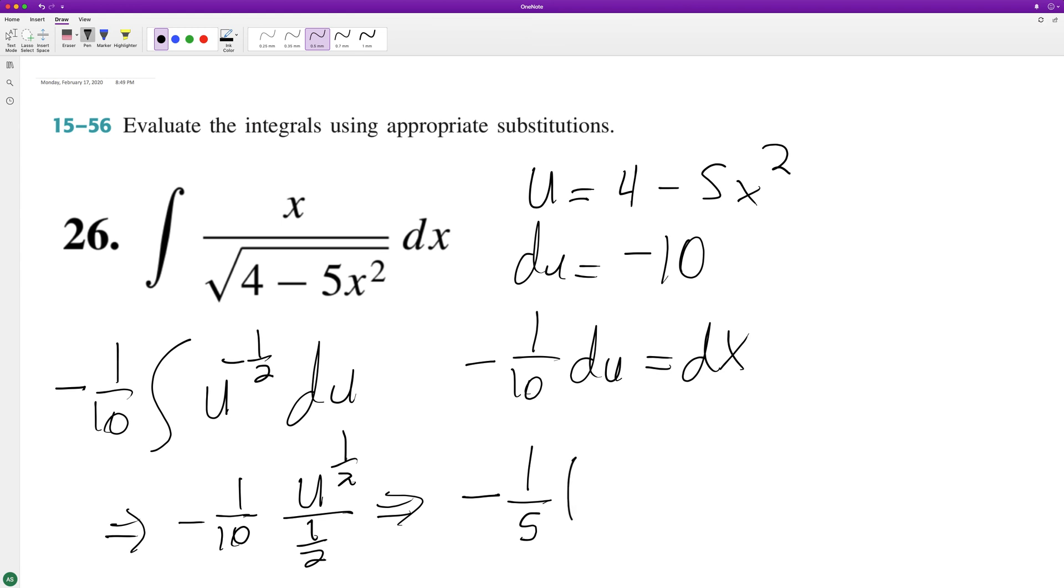U raised to the 1 half, so we'll just substitute back in 4 minus 5x squared. I'll just keep it as 1 half, even though it's the same thing as a square root, and then we'll add c.